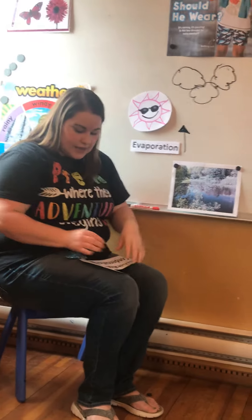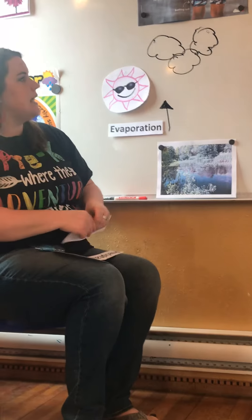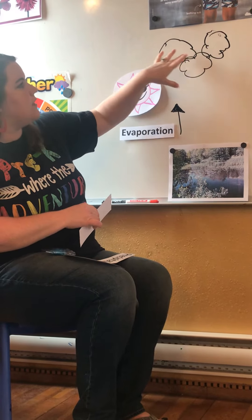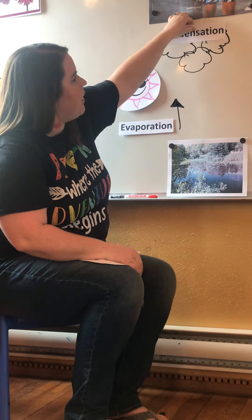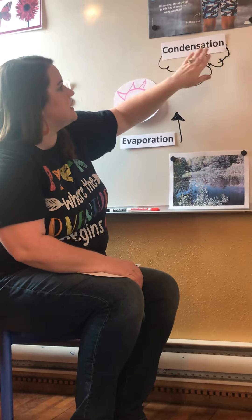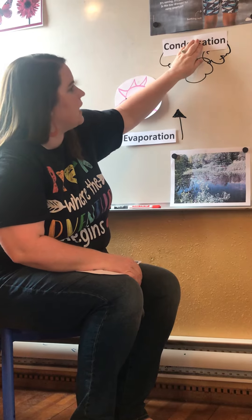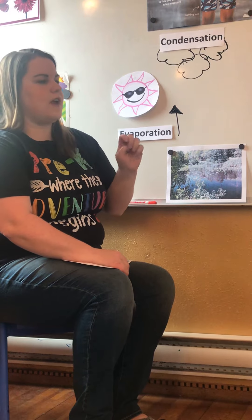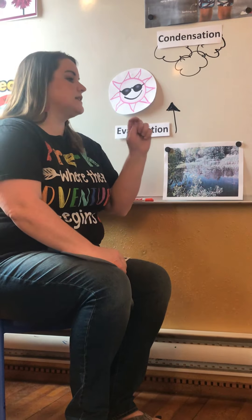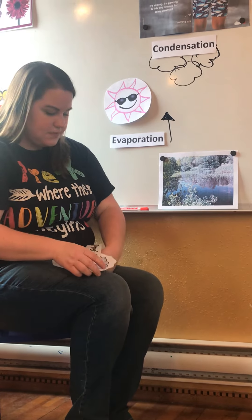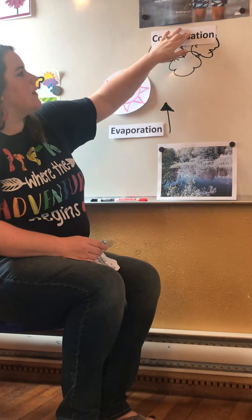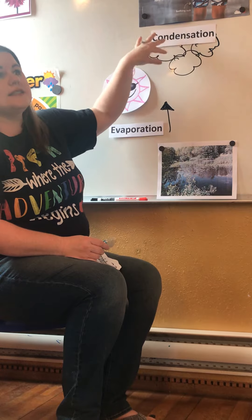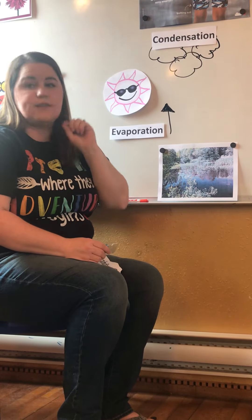When the water droplets get up to the sky, where do they go? Up into the clouds — they form clouds. All these water droplets form clouds in a process called condensation. You don't need to memorize all these words; don't worry about that.